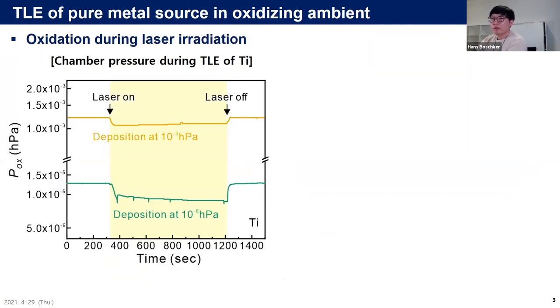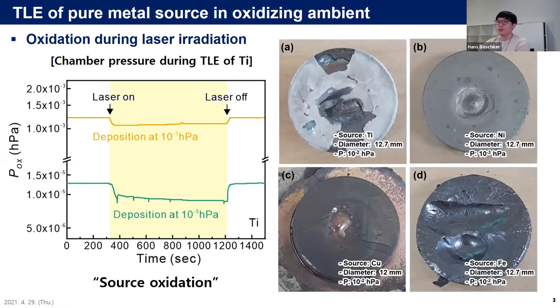I performed TLE of pure elementary sources in oxygen ambient on unheated silicon substrate. The oxygen gas pressure is in a range of below 10^-7 to 10^-2 Pascal. During the test I observed temperature and pressure drop under laser radiation. This is the chamber pressure decrease during titanium deposition. This means the injected gas is used for oxidation. Considering that oxidation is more active at higher temperature, this pressure drop is mainly attributed to the source oxidation. Indeed, we observed the oxidized source after the test.